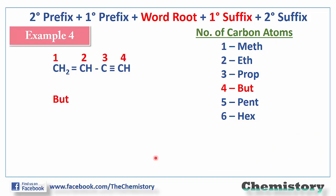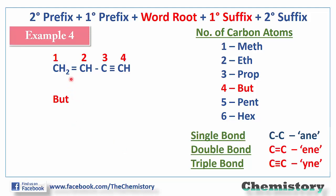Example number four: the total number of carbons here is four, so the word root will be 'but'. Now here we have one double bond and one triple bond. Compounds that have both a double bond and a triple bond present are called 'en-yne'. We will understand en-yne in detail in unit number three when we study general rules.